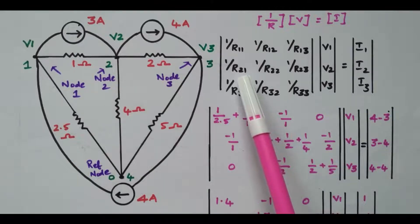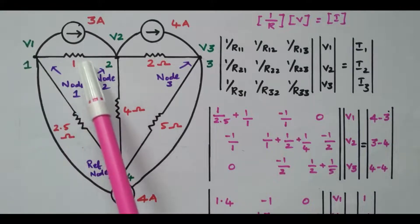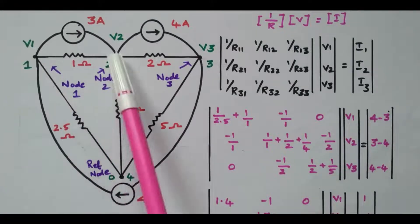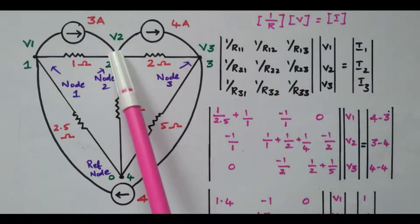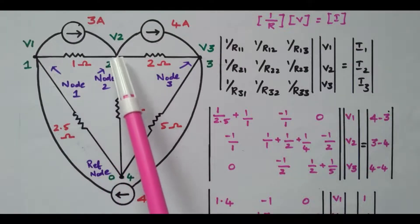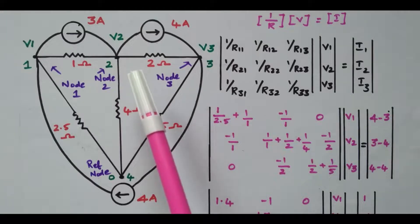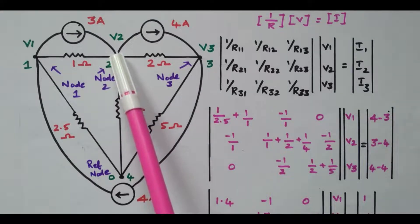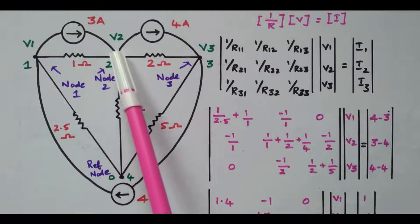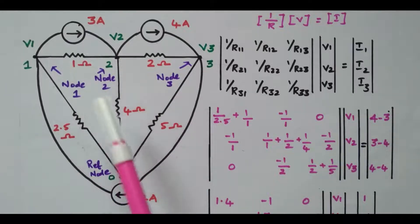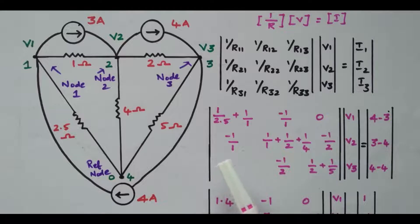R21 is connected between node 2 and node 1 — same 1 ohm — so minus 1/1. R22 is the sum of resistors connected at node 2: the 1 ohm, 4 ohm, and 2 ohm are connected at node 2. So R22 = 1/1 + 1/4 + 1/2.